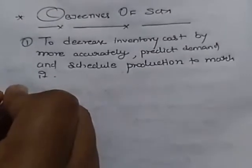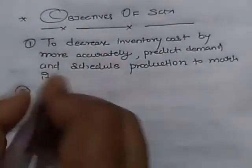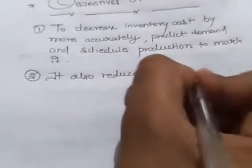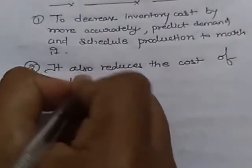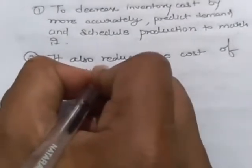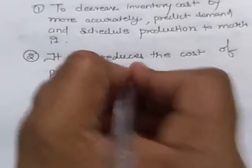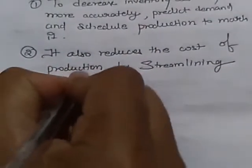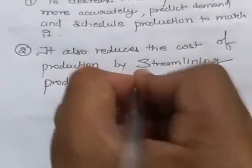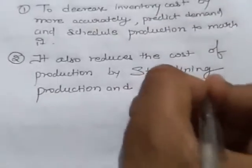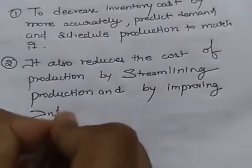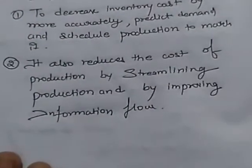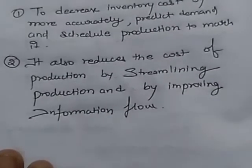Second, SCM reduces the cost of production by streamlining production and by improving information flow. In short, it reduces the overall cost of production.